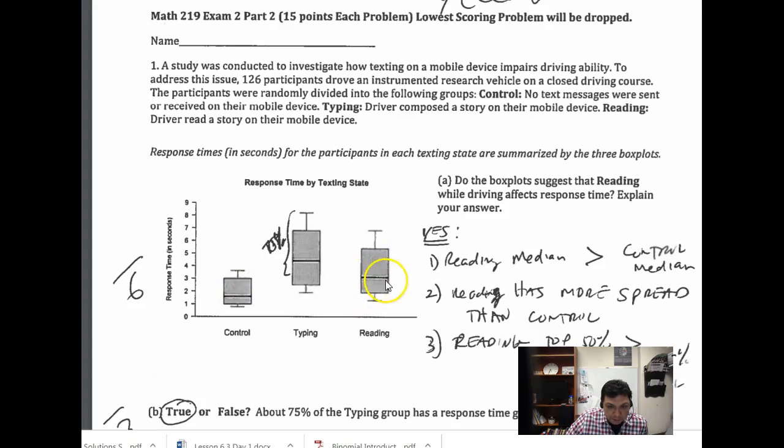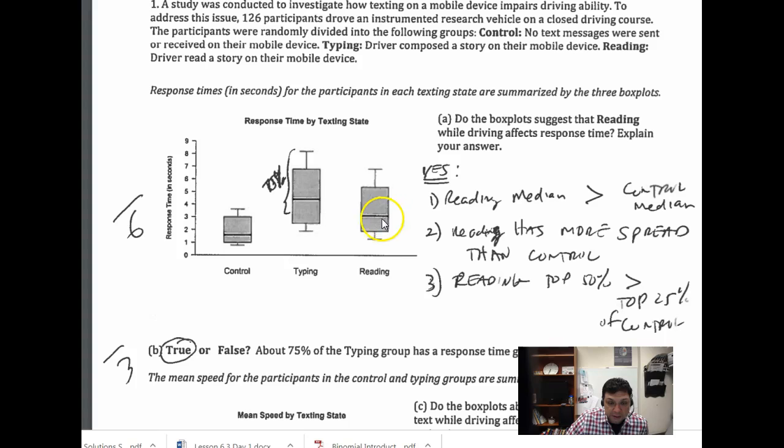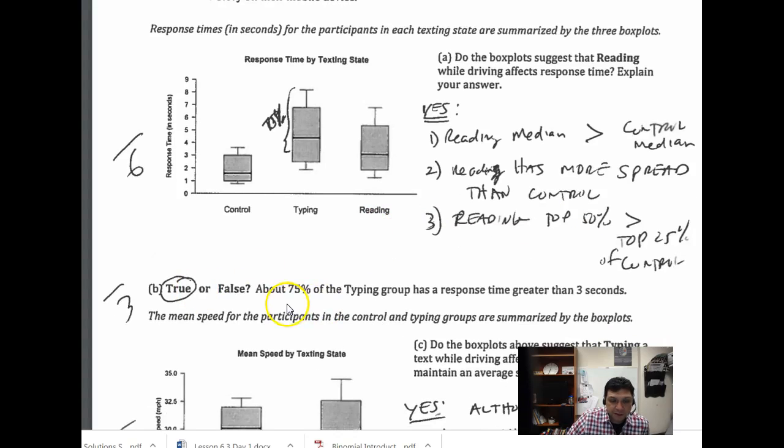You can see in the box plot this middle line is the median. Because this median is more than this median, we have some hint that reading does influence response time since response time is here on the y-axis. So we would say it does. The other thing is how it influences: it makes people respond differently because the box plot has more dispersion. So that's how it affects it, also through its dispersion or its spread.